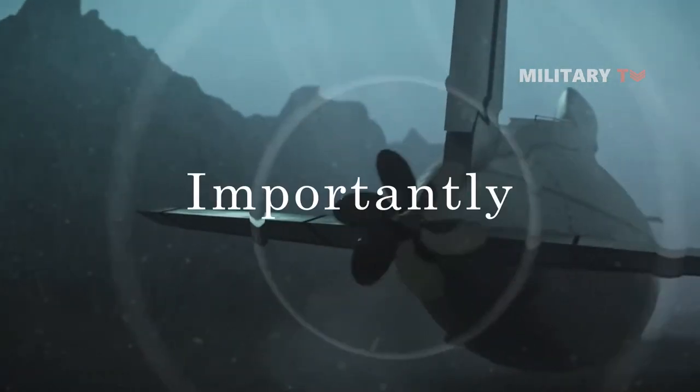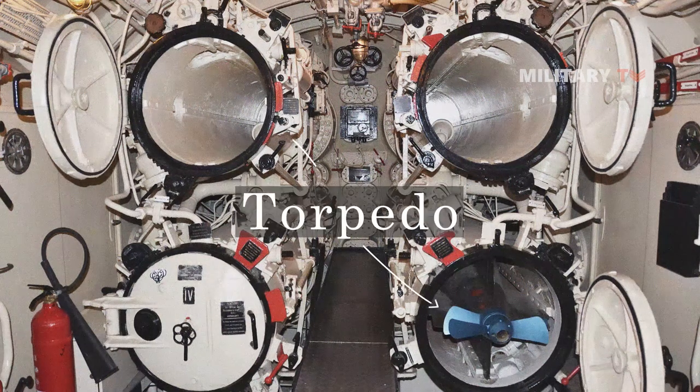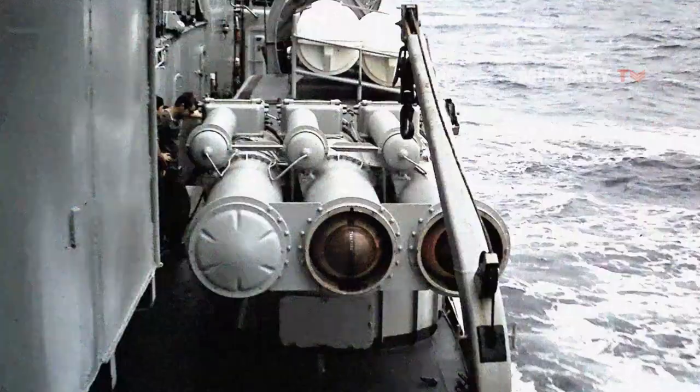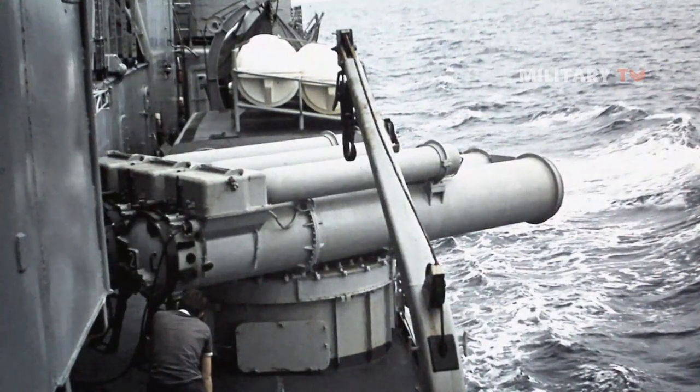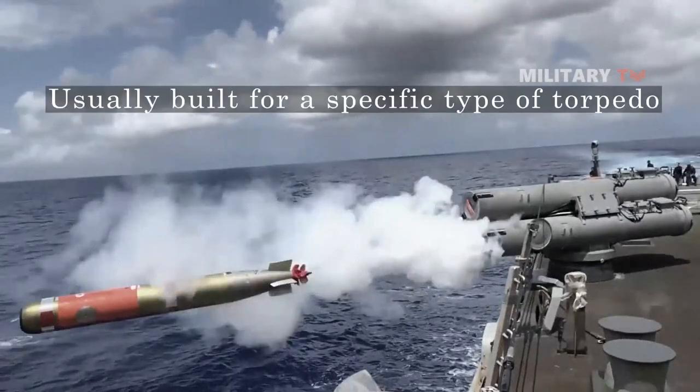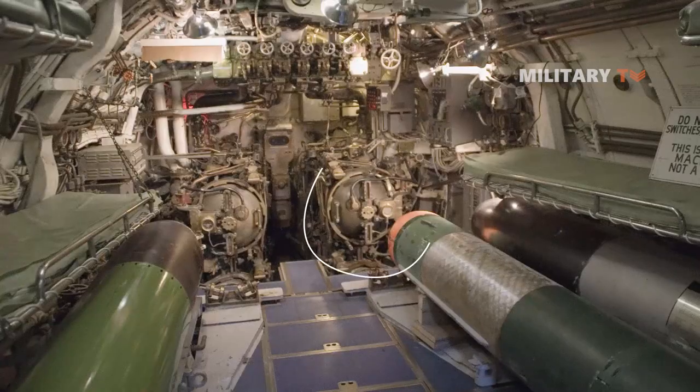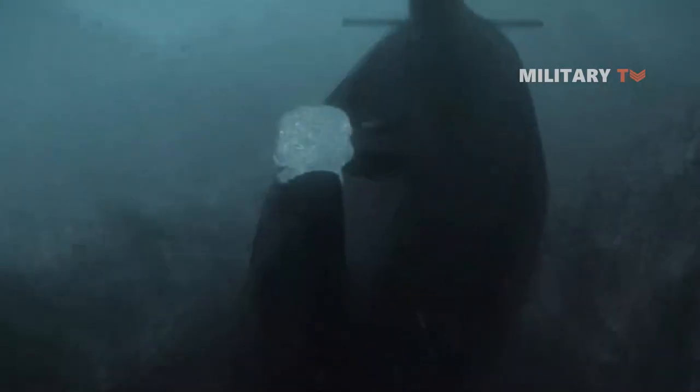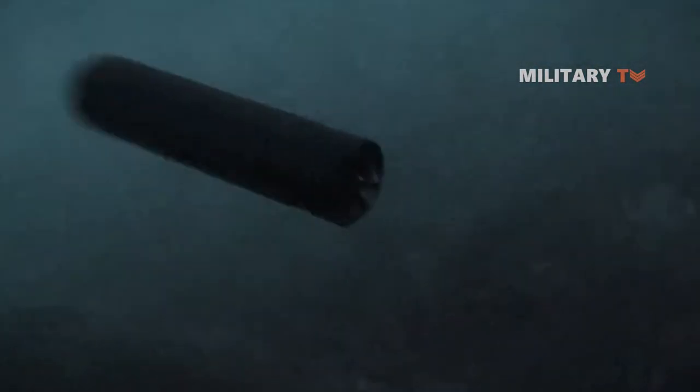Importantly, before the launching process, the torpedo is located in a torpedo tube. It's a cylinder-shaped device installed aboard surface vessels. Deck-mounted torpedo launchers are usually built for a specific type of torpedo, while submarine torpedo tubes are general-purpose launchers and are often capable of discharging mines and cruise missiles too.